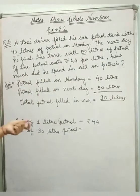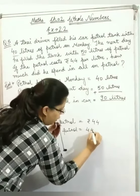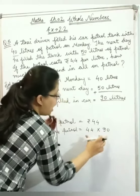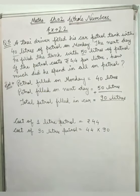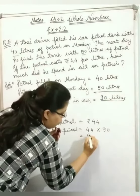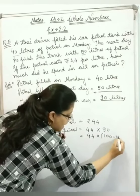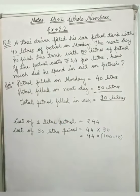Now, you see 44 multiply by 90 here, we can use distributive property. So what do we do? 44 into... 90 is equal to 100 minus 10. So using distributive property: 44 into 100 minus 44 into 10.